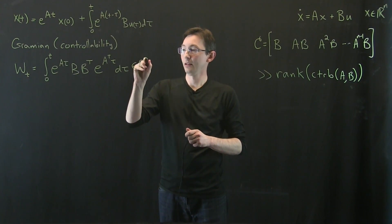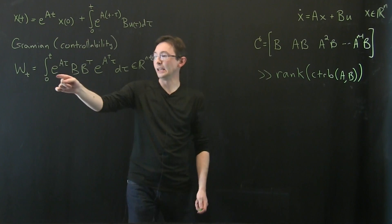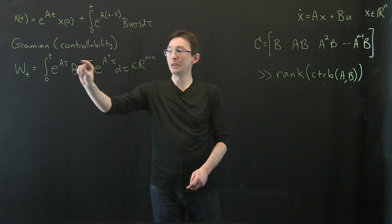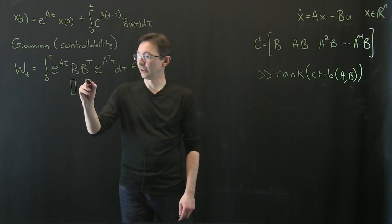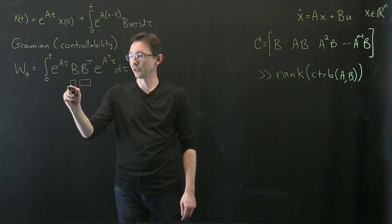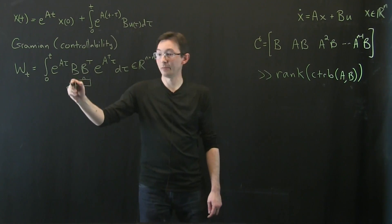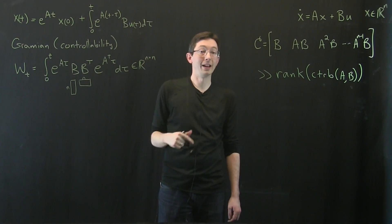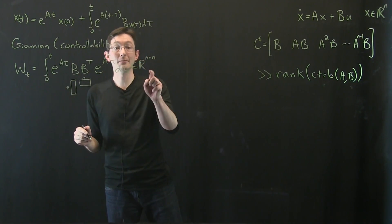This is an n by n matrix. So this is easy to verify, e to the At is an n by n square matrix. B, B transpose, so if I have this column vector, column vectors in B, and I multiply it by column vectors in B transpose, the outer dimensions are both n, so I get an n by n square matrix, and then e to the A transpose t is also an n by n square matrix. So long story short, this Gramian is an n by n matrix.